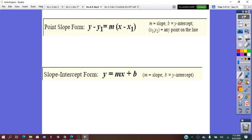From before, we said that a line has a slope-intercept form equation, which is y equals mx plus b, in which the m represents the slope of the line and the b is the y-intercept of that line.